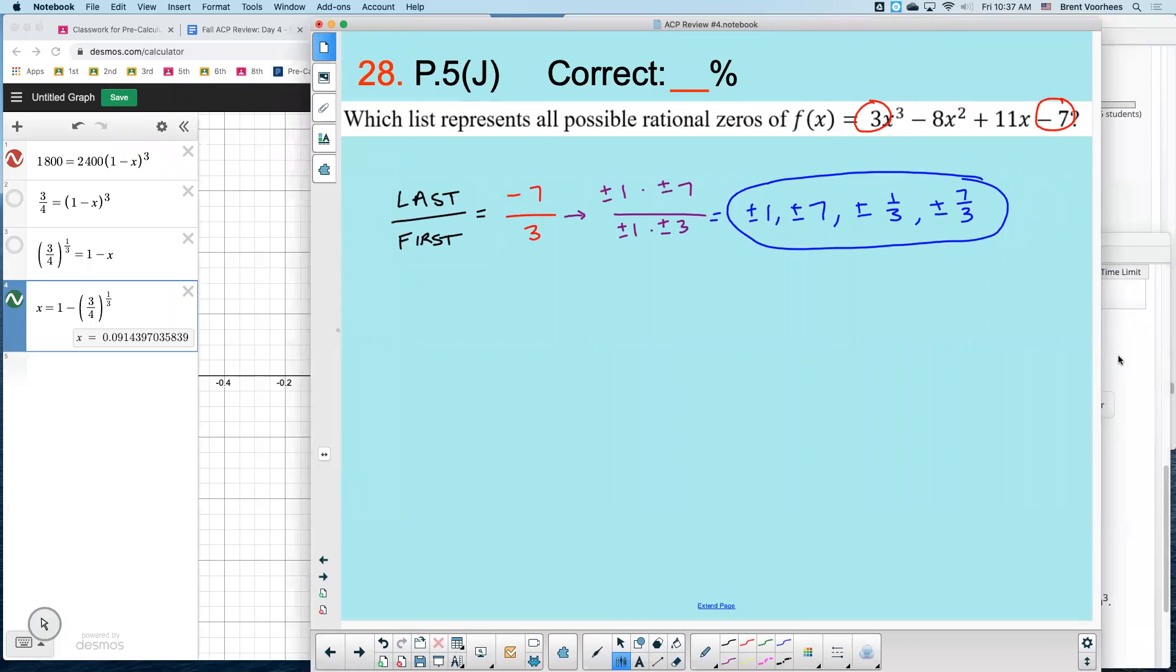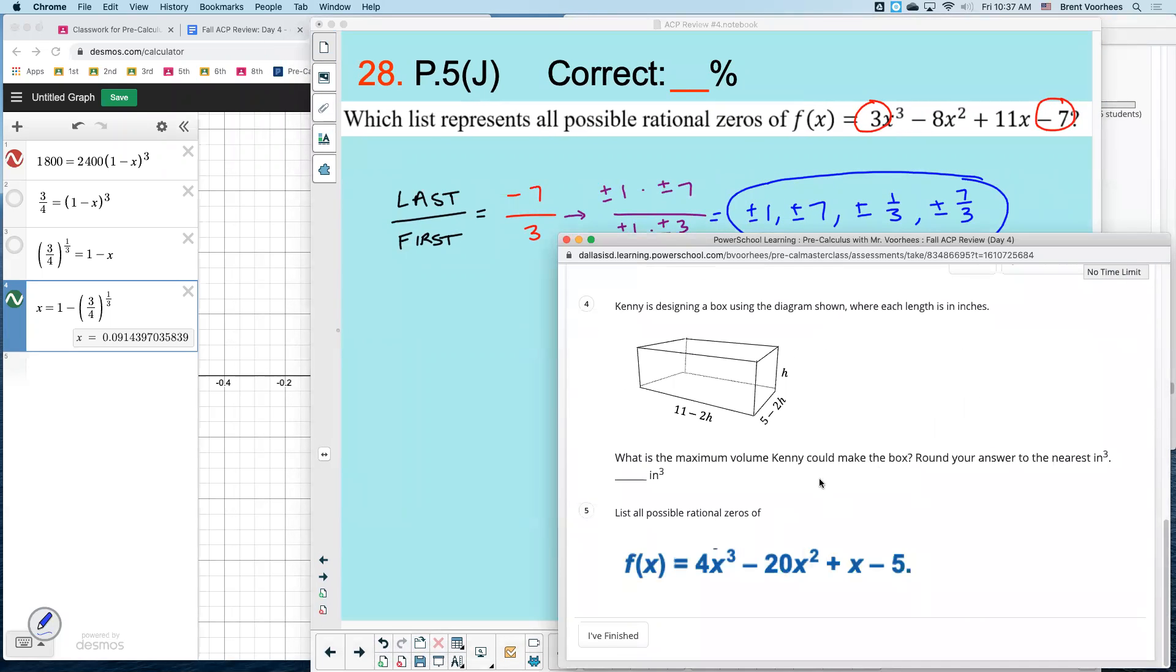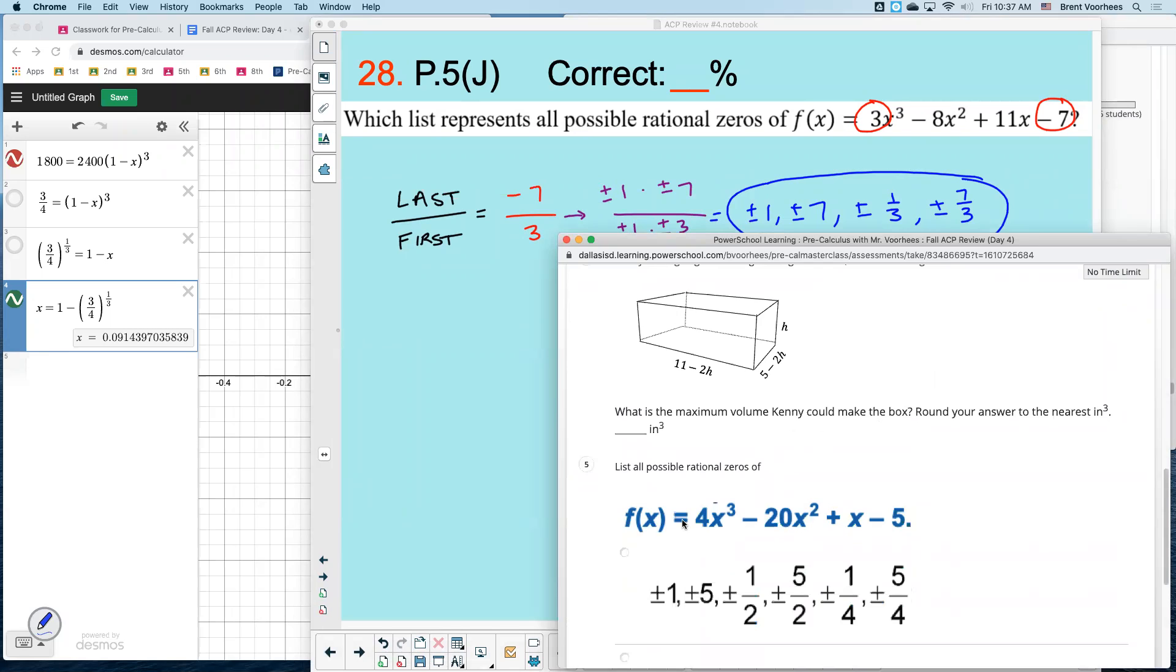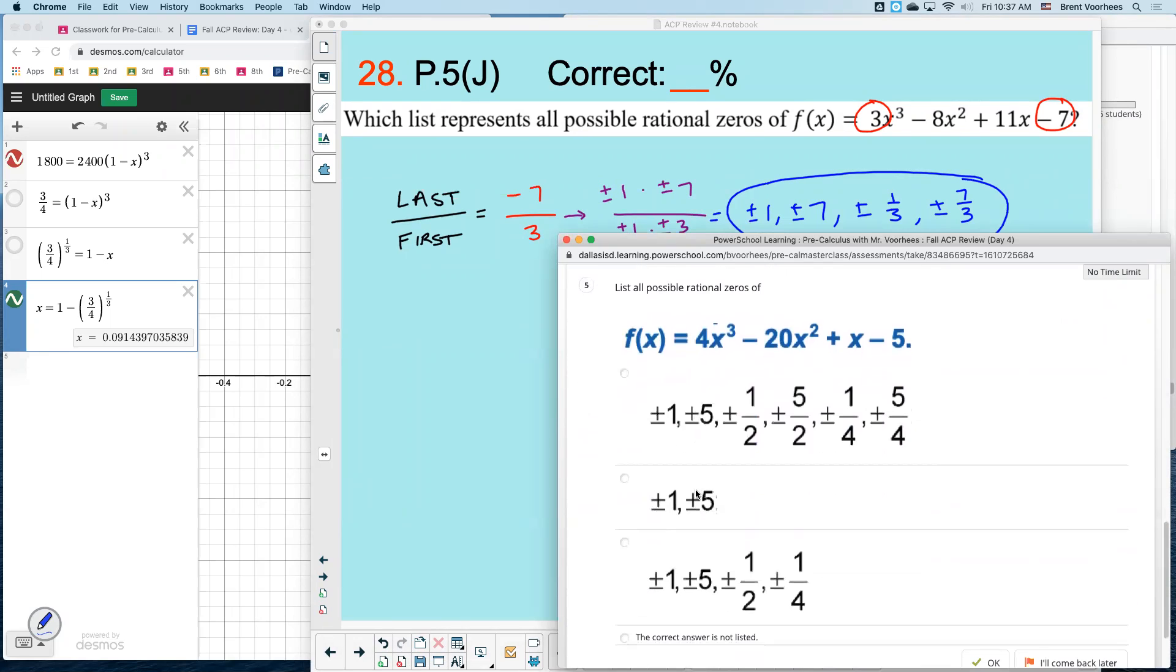So with that, I'll give you your last DOL of the lesson, number five here. List all possible rational zeros of this.